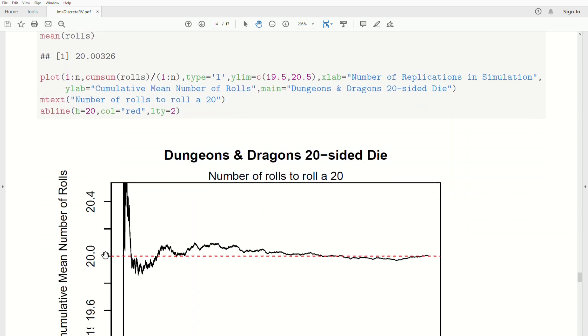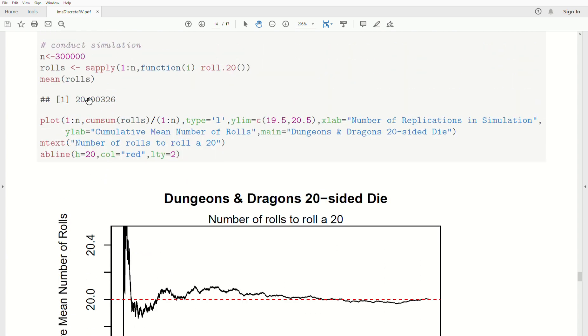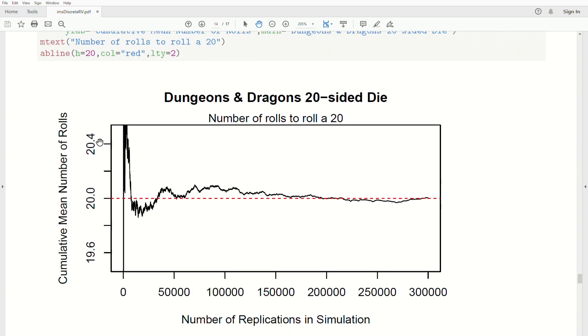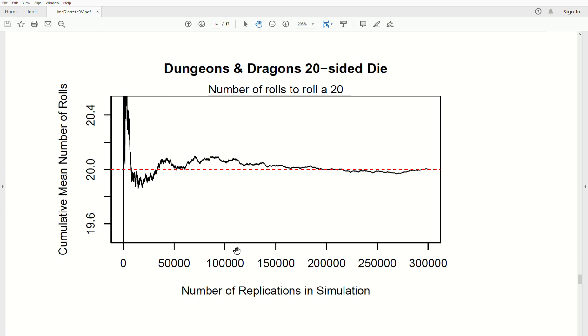If we look at a plot, and as always, I copy and paste the R code in the comments section. If we look at 300,000 reps, and we just track our cumulative average as we go across.